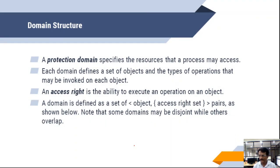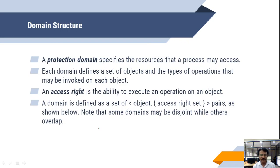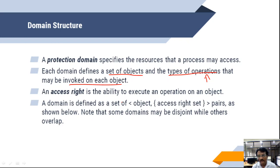Now let us understand the structure of the domain. A protection domain specifies the resources that a process may access. Each domain defines a set of objects and the types of operations that may be performed on those objects. For example, for a data file, the possible operations are read, write, execute, delete, and append. What type of operations we are going to perform on a particular object must be defined — that forms the domain.